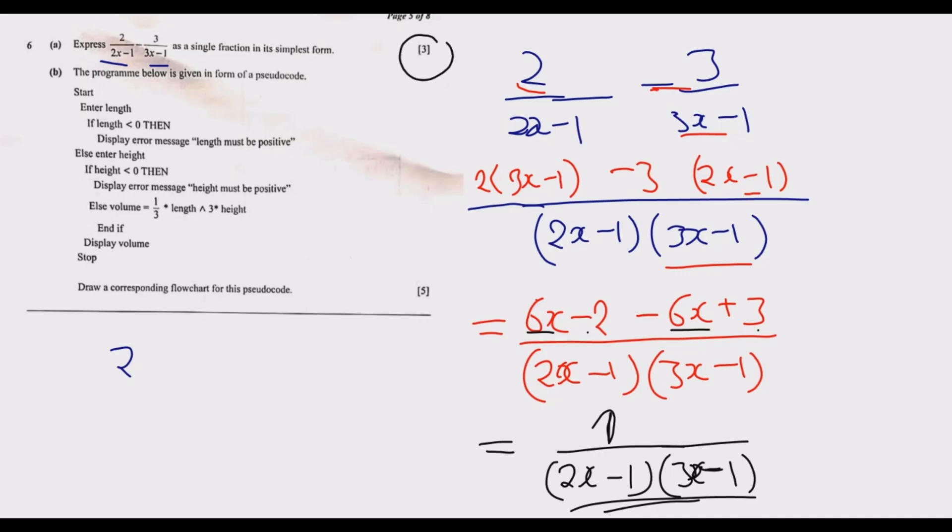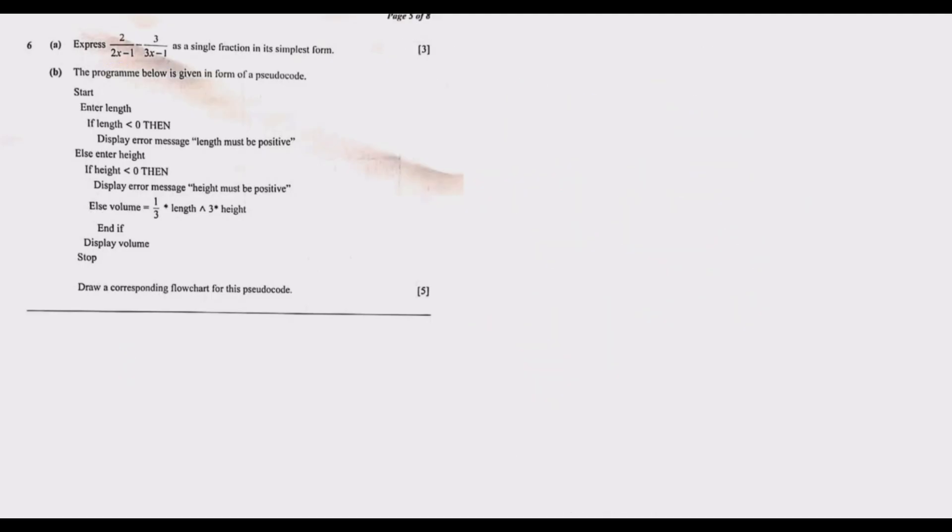Remember the tips I've given you about the tricky parts. Having done that, let's go to part B of question six. Part B is on computers and algorithms. The program is given in the form of a pseudocode: start, enter length, if length is less than zero then display error message 'must be positive,' then enter height.